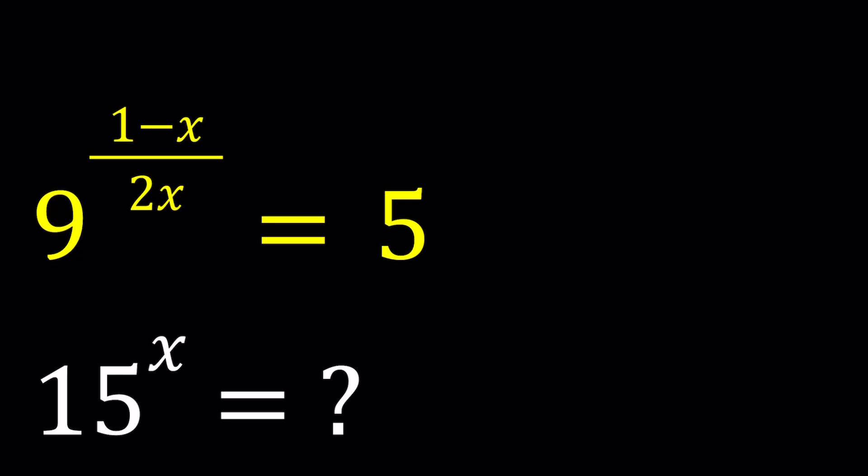We have 9 to the power 1 minus x divided by 2x equals 5, and we're supposed to evaluate 15 to the power x. I said this is an exponential equation. You can solve for x and then plug it in, and I'll be presenting multiple methods, probably two at least. Let's get started with the first one.